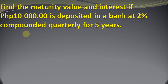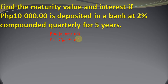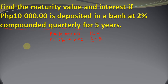The maturity value, which is the compound amount, is what we're looking for. The given values are: P equals 10,000; r is 2%, which we convert to decimal as 0.02; compounded quarterly so the value of k is 4; and T is 5 because that is 5 years. If months were given, you would need to convert to years.